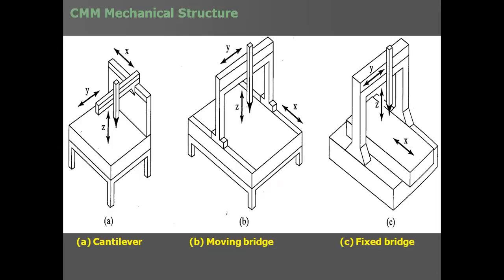For the mechanical structure of a CMM, several configurations are available. The cantilever type has a beam acting as a cantilever — the vertical arm's load acts on it, providing X, Y, and Z movement.